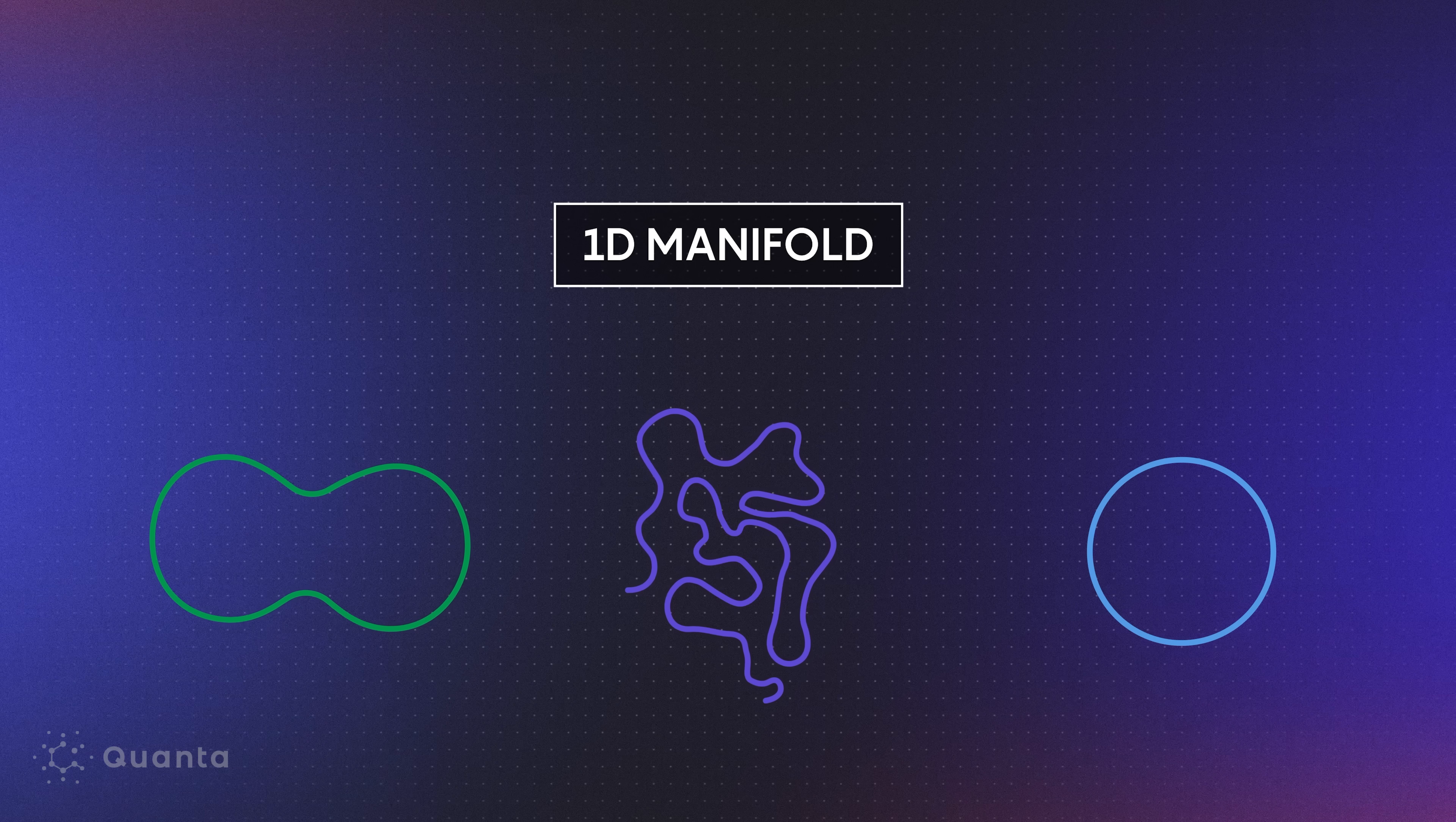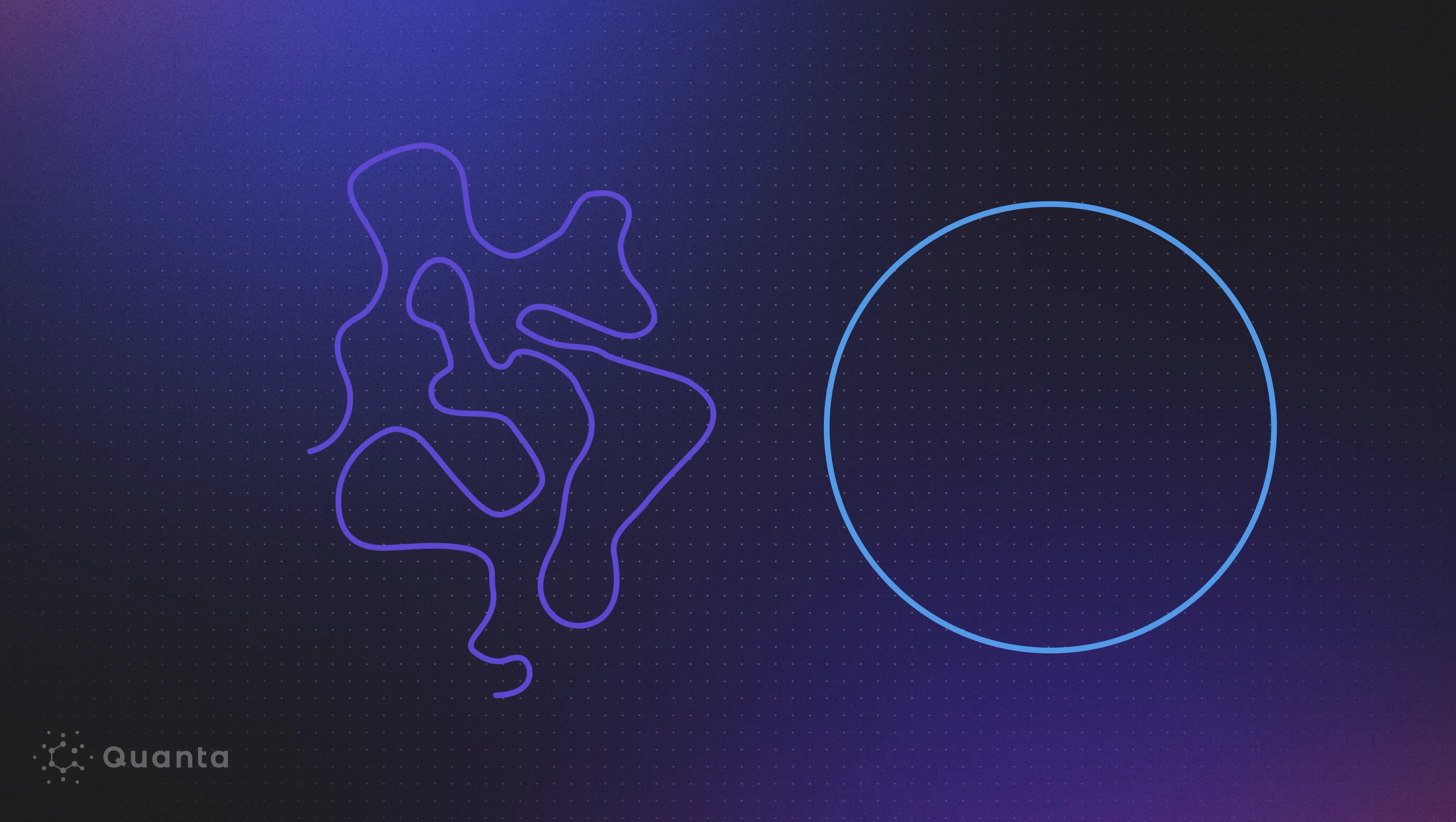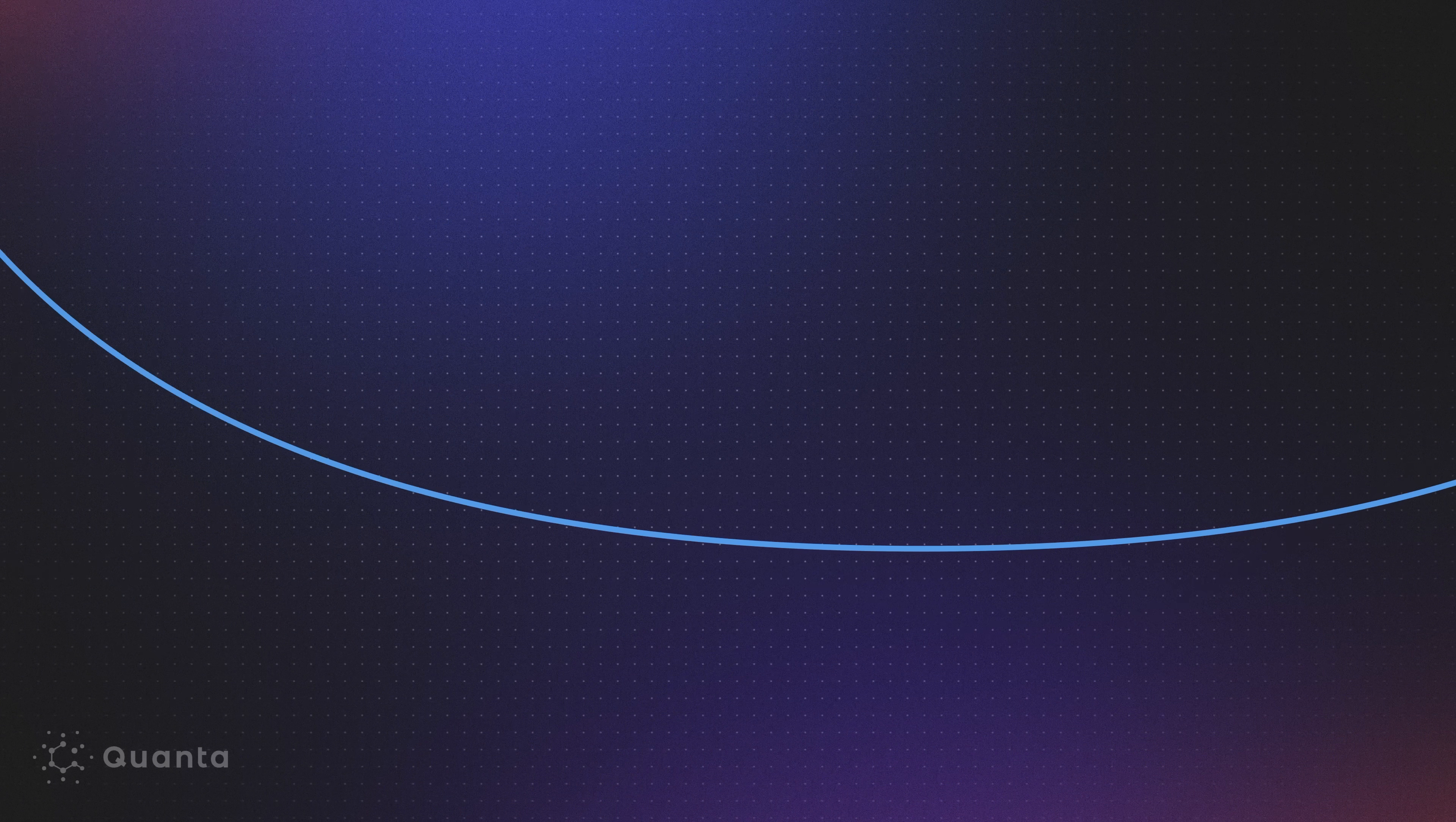A one-dimensional manifold, or a one-manifold, would be a manifold where at every point I can zoom in and it looks just like a line. One example would be a circle. A circle isn't a line, but if I zoom in really close, it looks like a line.